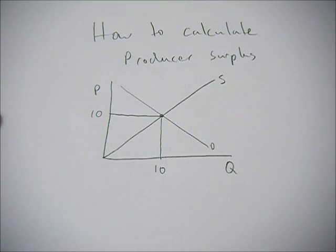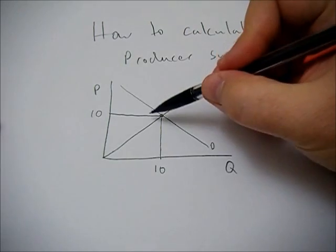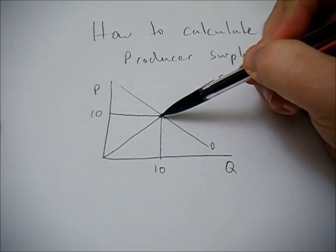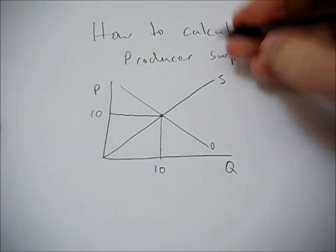This movie is going to show you how to calculate producer surplus and just talk about what it is. So producer surplus is the area below the price curve but above the supply curve.